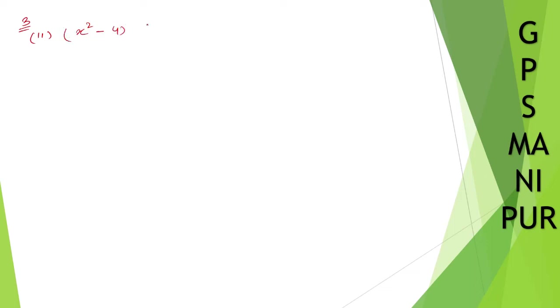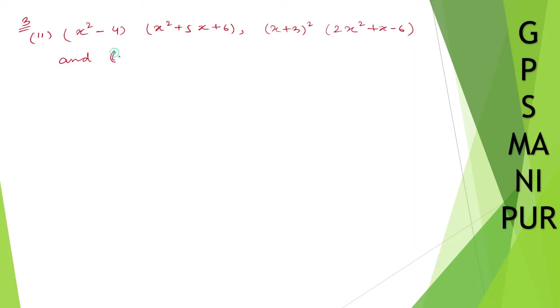Now we are doing Exercise 2.4, question number 3, Roman number 2. We have x squared minus 4 into x squared plus 5x plus 6, next is x plus 3 whole square, 2x squared plus x minus 6, and next is 4x squared minus 12x plus 9.